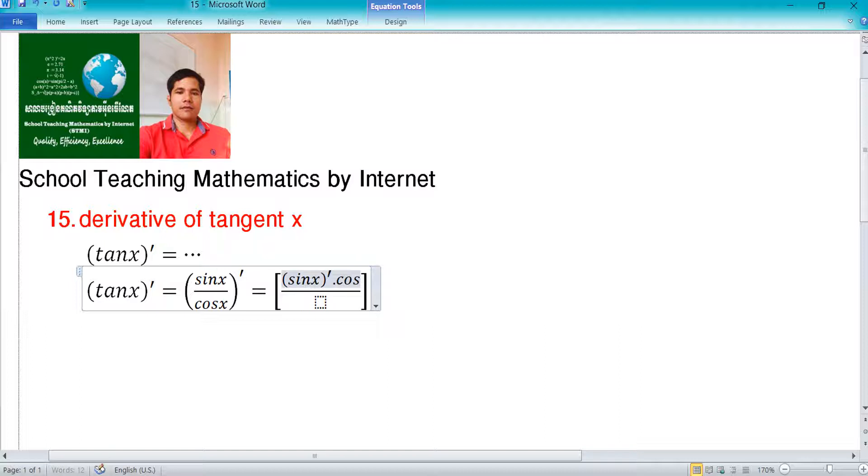Times cosine x minus cosine x prime times sine x, divided by cosine x. You remember u divide v equals u prime v minus v prime u divide v square. In this.